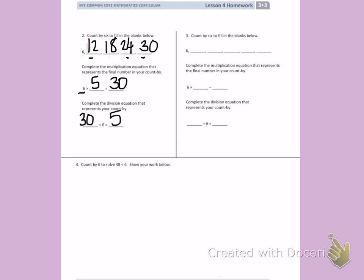Number 3, count by 6 to fill in the blanks below. So again, you can look at the other side of your paper to help you count by 6. Six, 12, 18, 24, 30, 36.